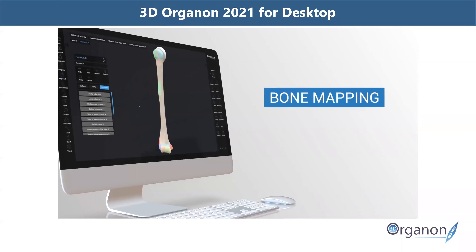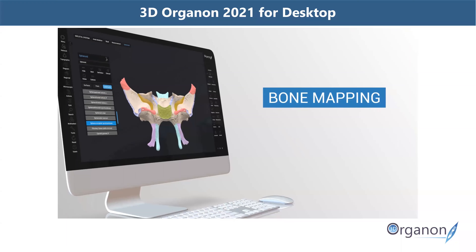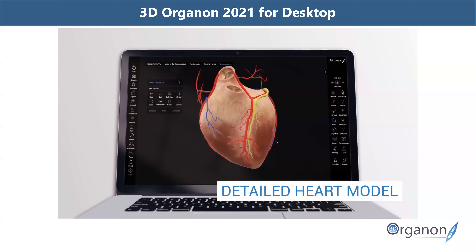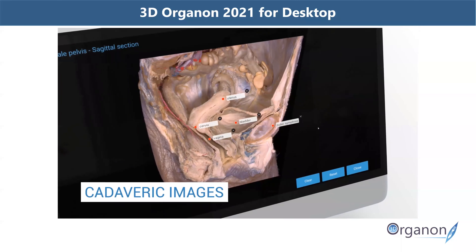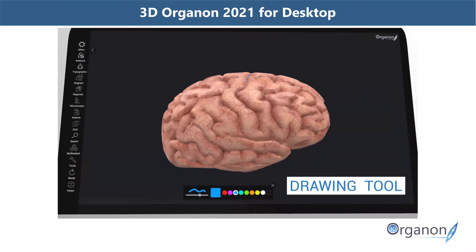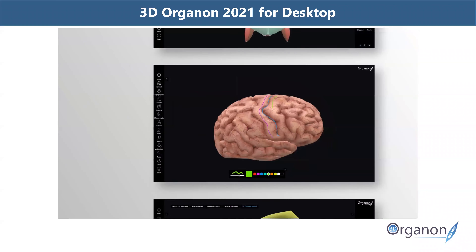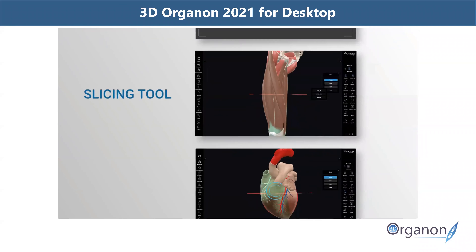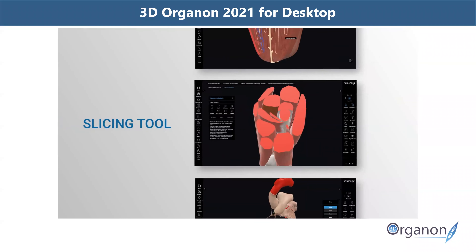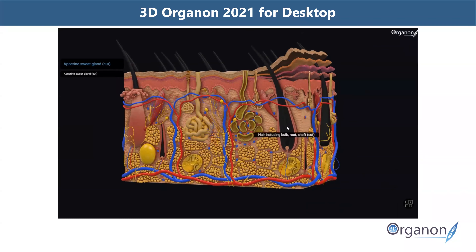The bone mapping module organizes each bone into parts, borders, surfaces and landmarks. There's also a detailed heart model, hundreds of cadaveric images related to the selected body system, a drawing tool and sketch feature for explanations on top of 3D models, and a slicing tool to section the 3D model from any angle in real time.